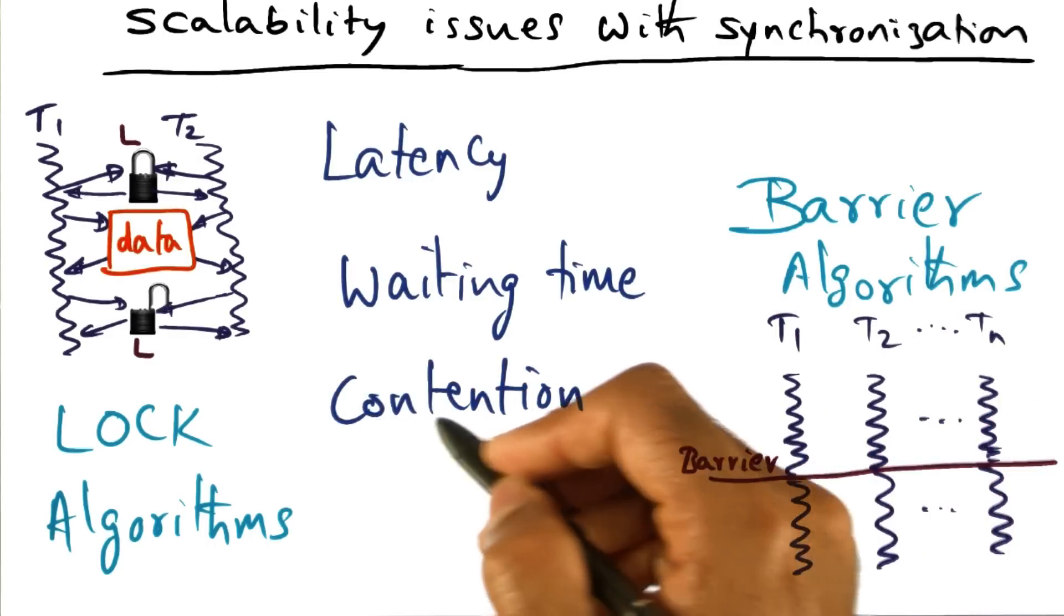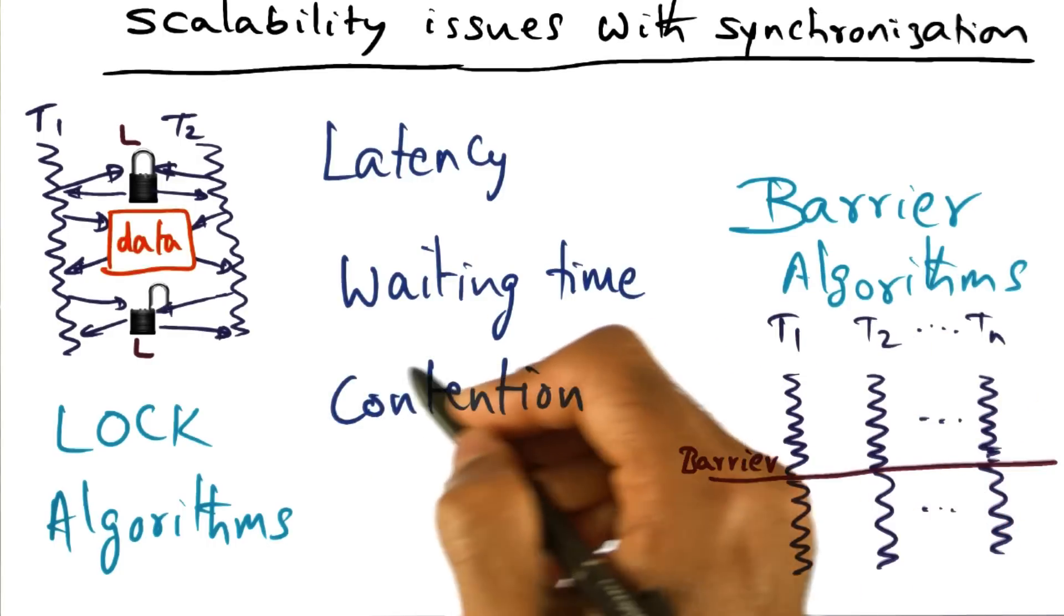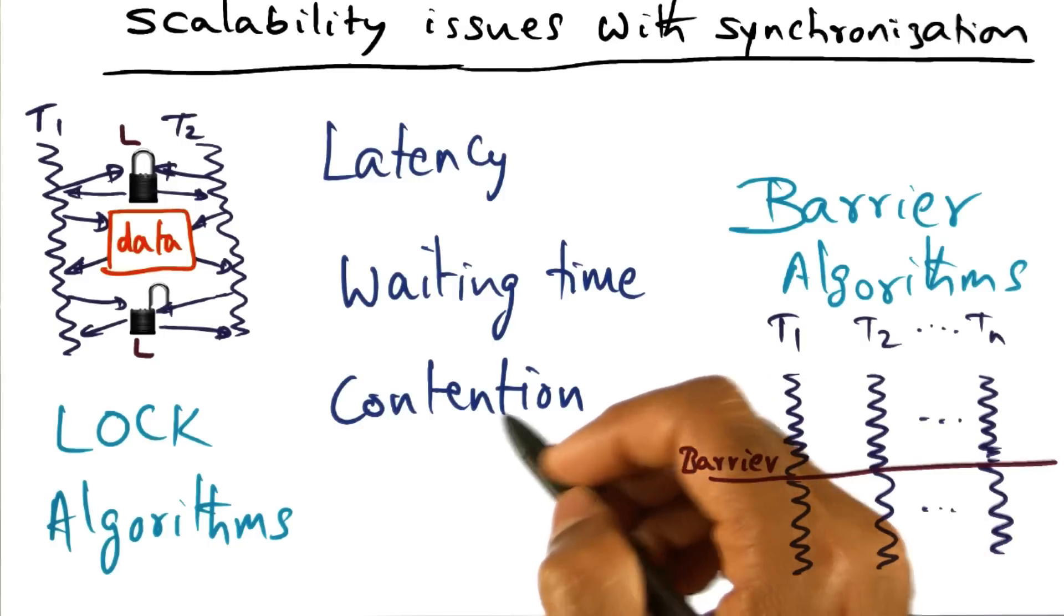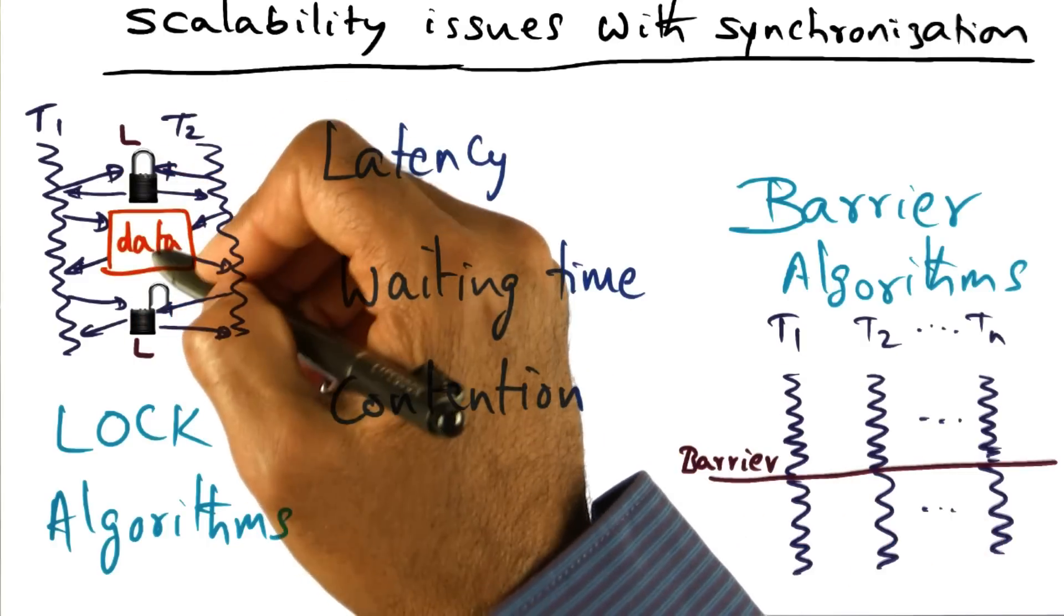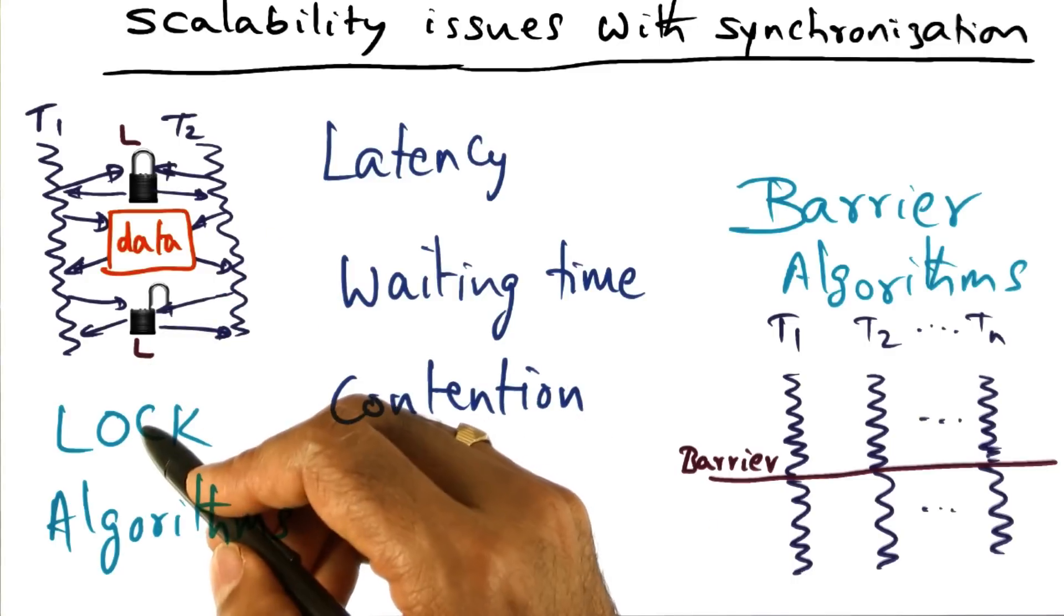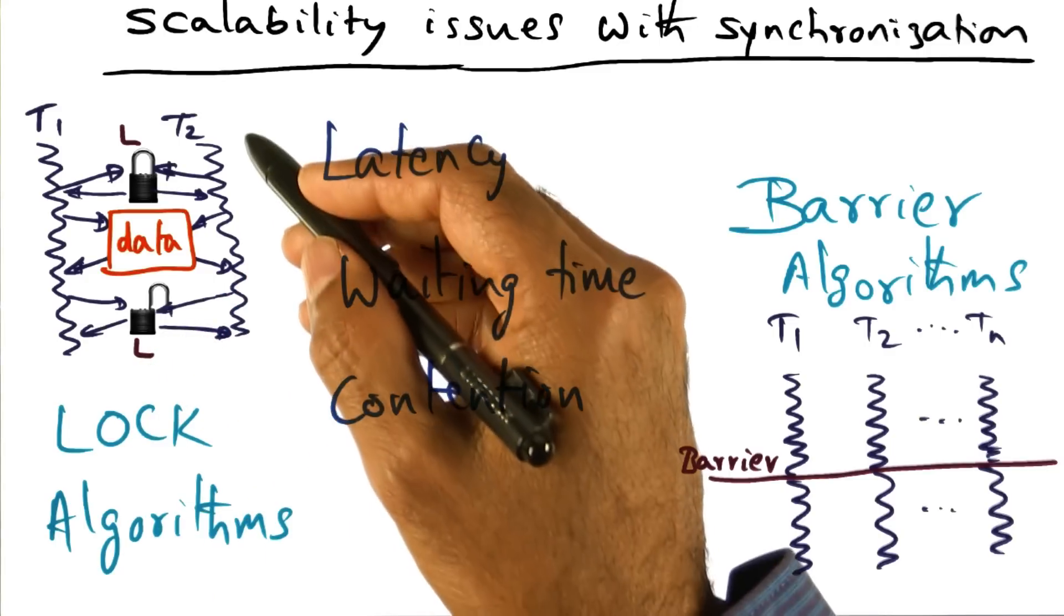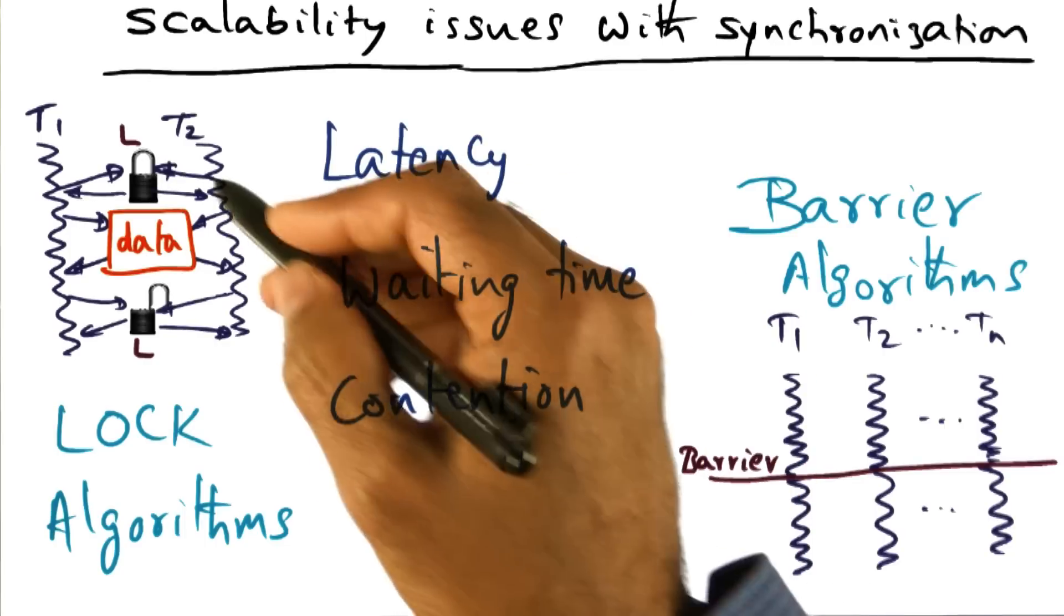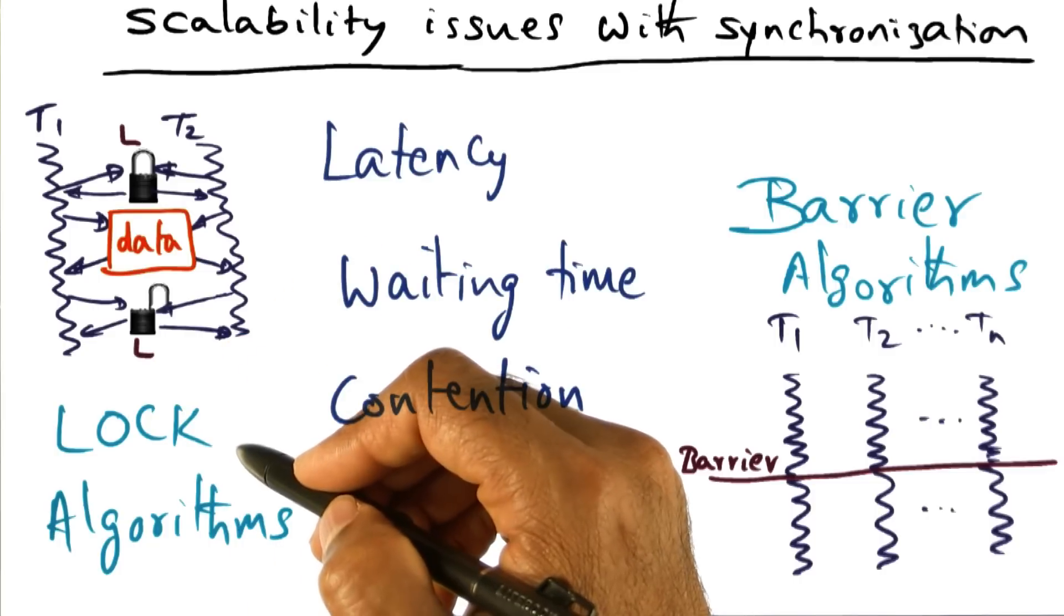The third source of unscalability of locks is contention. What we mean by that is, if currently some thread is using the lock and releases it, when the lock is released, it's now up for grabs. Maybe I've shown you only one thread here, but maybe there's a bunch of threads waiting here to access this particular lock.